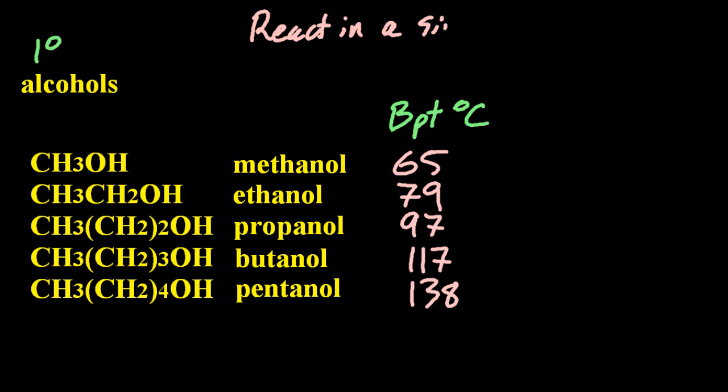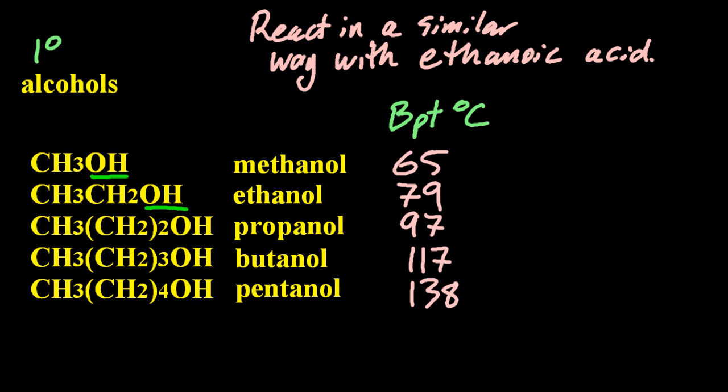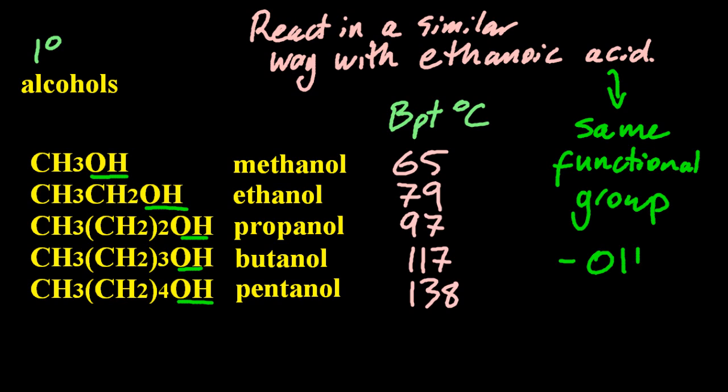A chemical property, such as reacting with ethanoic acid—they all react in a similar manner, but they produce different products and at different rates. So why is the chemical property similar? Why do they all react in this similar manner? Because they have the same functional group.